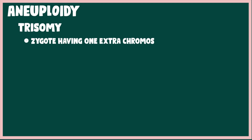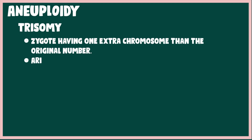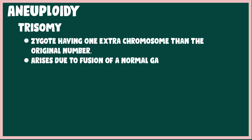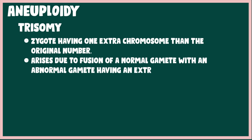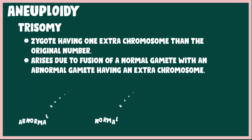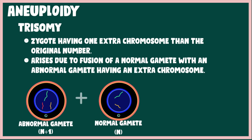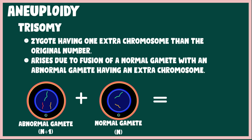The second type is trisomy, which represents a zygote having three copies of a particular chromosome in a diploid cell. This usually occurs due to the fusion of a normal gamete with a gamete having an extra chromosome.